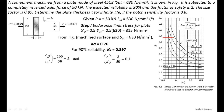For the ratio r/d = 0.1 and the maximum-to-minimum width ratio of 2, we locate the value on the curve. The stress concentration factor Kt is approximately 2.27.